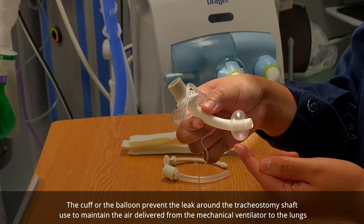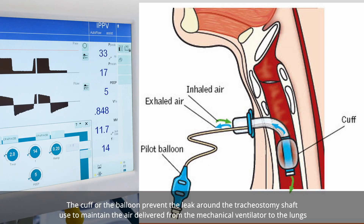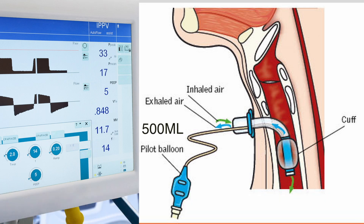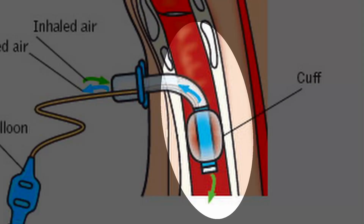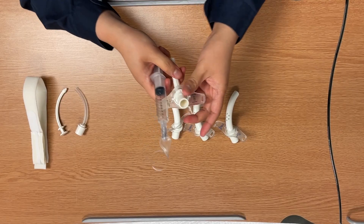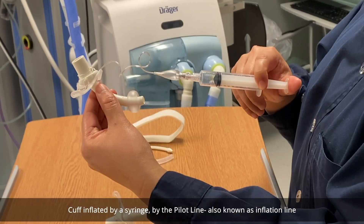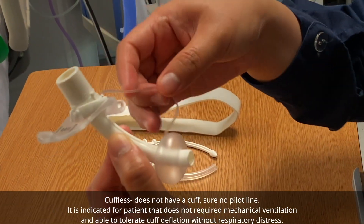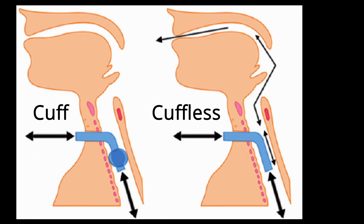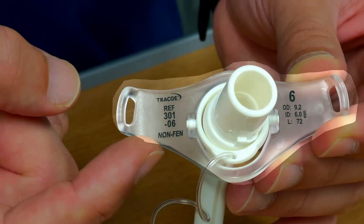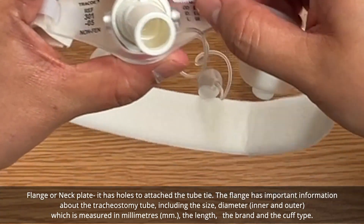The fenestration is also used as an alternative for patients in the weaning process or those who need a tracheostomy permanently. The outer cannula can be cuffed or cuffless. The cuff — the balloon — prevents air leak around the tracheostomy shaft and maintains the air delivered from the mechanical ventilator to the lungs. For example, if the ventilator delivers 500 mL of air, the cuff ensures that volume reaches the lungs without leaking around the tube. You inflate the cuff using a syringe and the pilot line. A cuffless tracheostomy has no pilot line and is indicated for patients who do not require mechanical ventilation and can tolerate cuff deflation without respiratory distress.